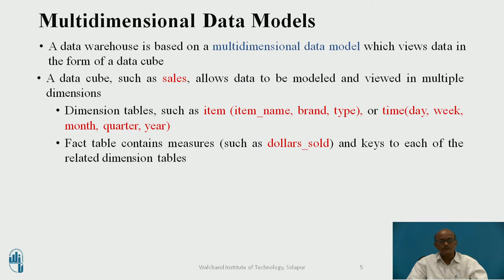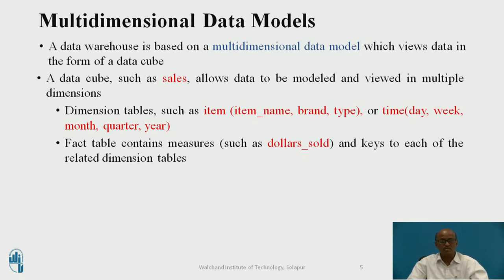A data cube — considering sales of a particular organization — contains attributes such as item, time (when the sales occurred), and location. Representing data in one dimension, you can represent either item, time, or total number of purchases. But in multidimensional, you can represent all these attributes at the same time in a cube.